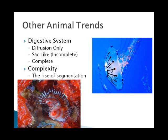Starting with the segmented worms, you have the rise of segmentation, which leads to increased specialization and complexity. Advanced animals all have body segments and specialization of tissue. Even humans have segments — if you look at the spine or the ribs, you can see remnants of segments from our embryology. Additionally, animals develop body cavities, which are fluid-filled spaces where internal organs can be suspended. Starting with one particular group, you get a true body cavity, which we'll cover next week.